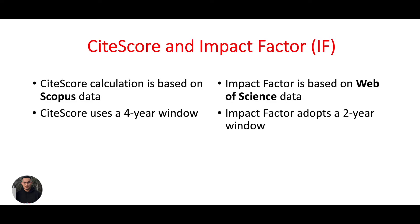The term 'impact factor' is only based on Web of Science data, while Scopus uses 'CiteScore' terminology. They are quite different because CiteScore uses a 4-year window while Impact Factor uses a 2-year window of journal citations, so they are different.